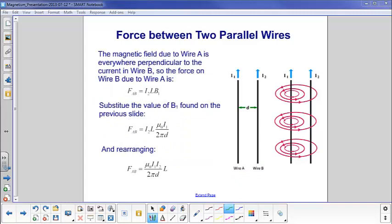We have the same diagram from the preceding page, where we have our two wires, wire A and wire B. Wire A is generating a magnetic field, and wire B is within that magnetic field.